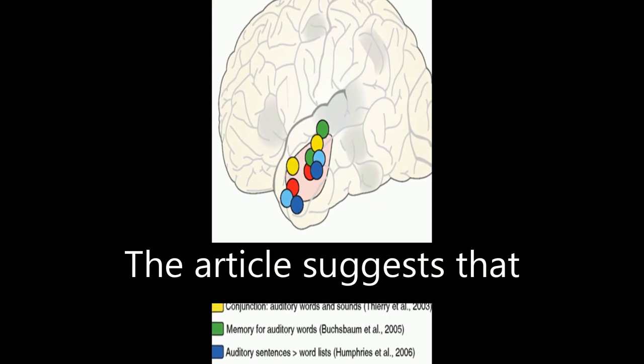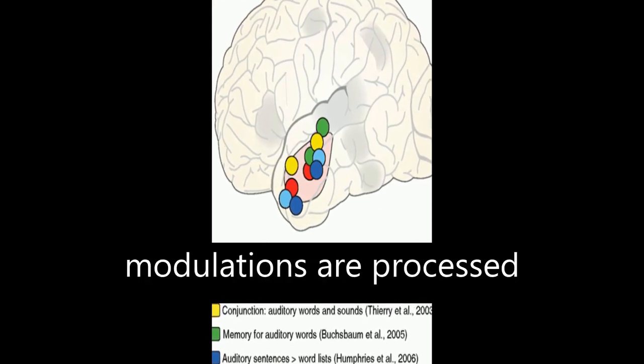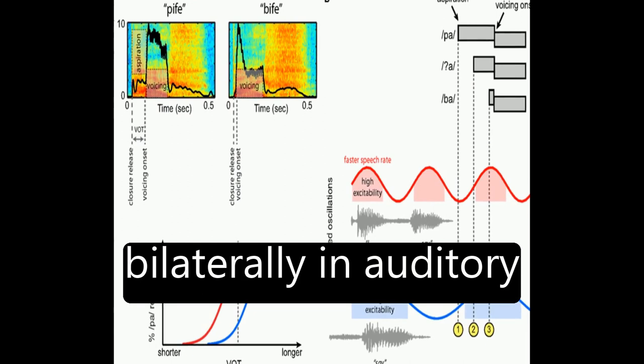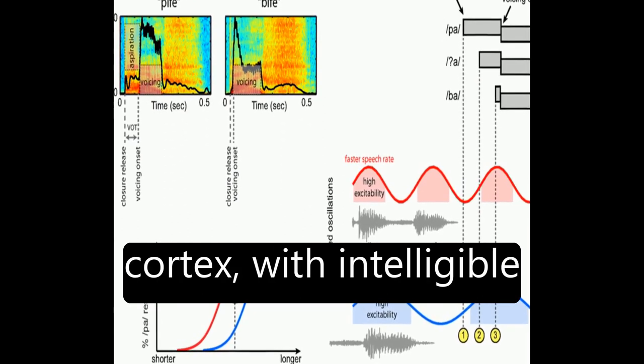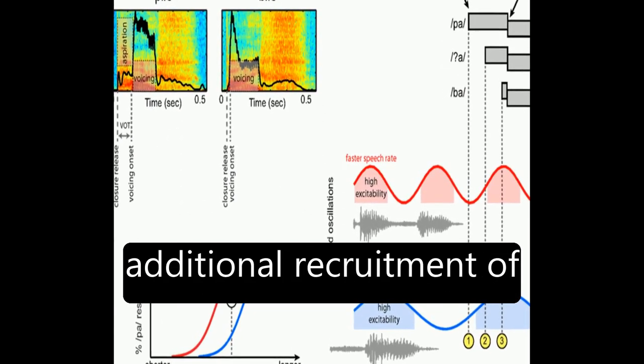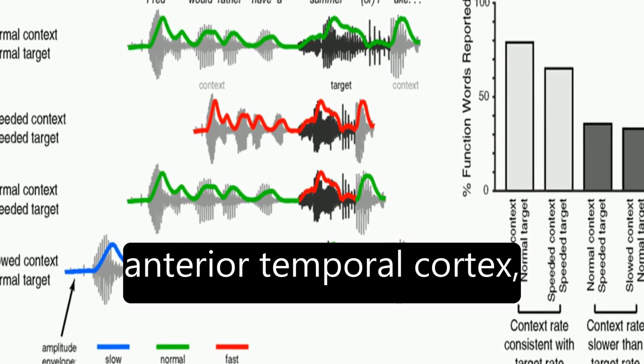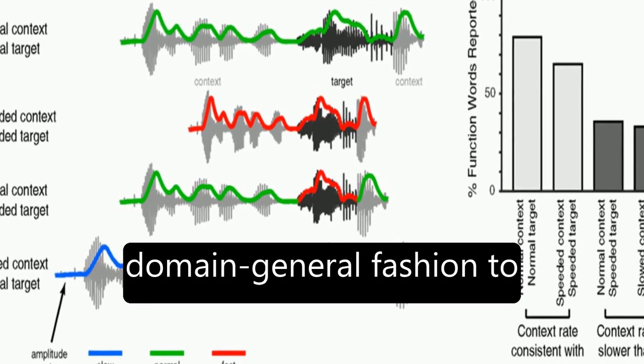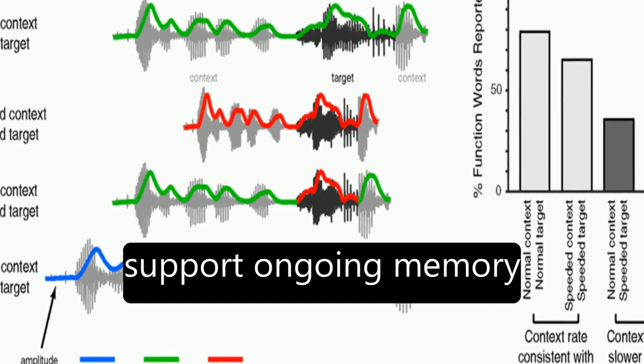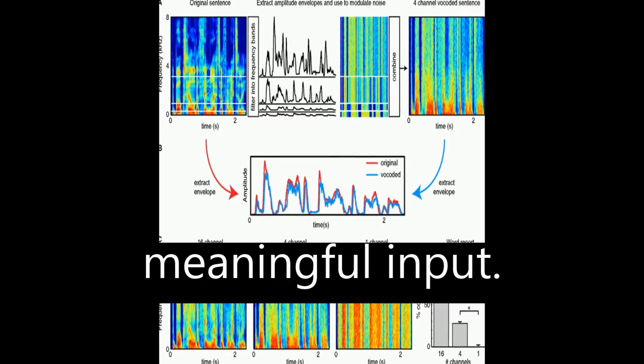The article suggests that acoustic amplitude modulations are processed bilaterally in auditory cortex, with intelligible speech resulting in additional recruitment of left hemisphere regions, including lateral anterior temporal cortex, which functions in a domain-general fashion to support ongoing memory and integration of meaningful input.